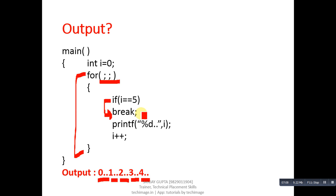Whenever you don't mention a condition in the for statement, you can use break inside the for loop to terminate its execution.